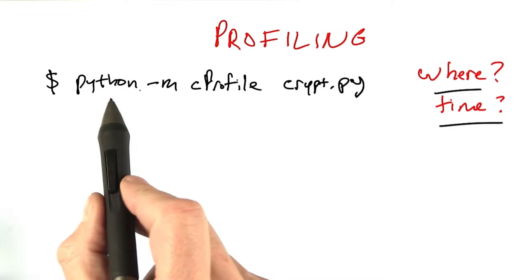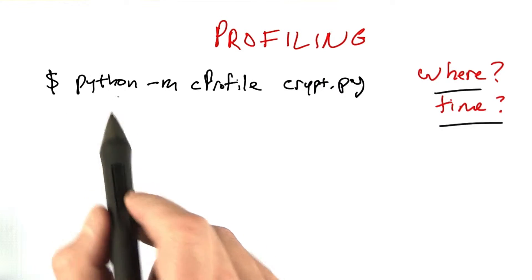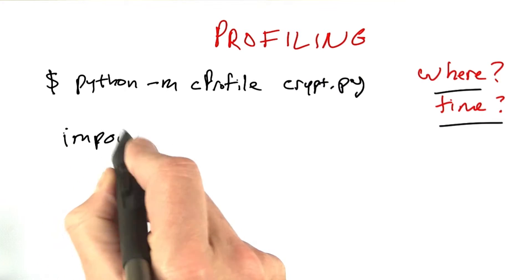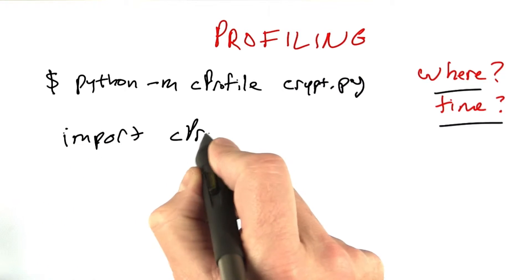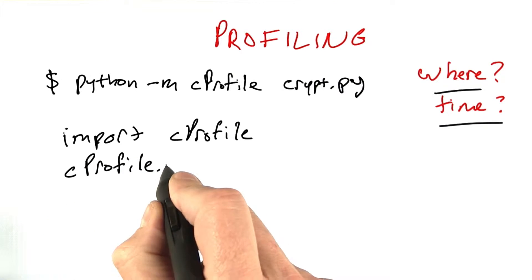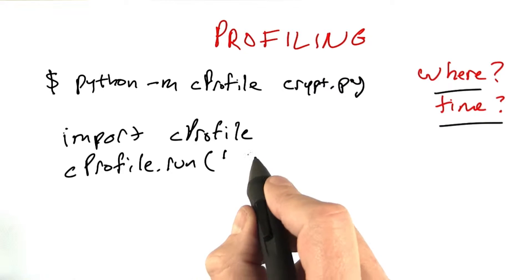Now if you don't have Python installed or you can't run a command like this, you can do it from within Python, and what you'll have to do is import the C profile module and then do cprofile.run and then a string to be evaluated, which is the code that you want to run.